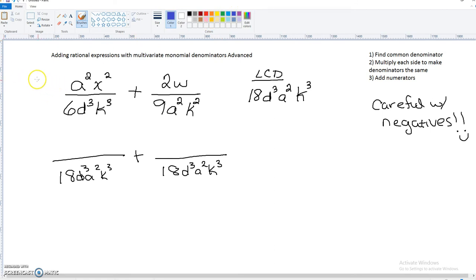Alright, so on this one, in order to make the 6 into 18, we have to multiply by 3. It has a d³, but it's missing an a². So we know we need to multiply by a², or a squared. And it already has a k³.